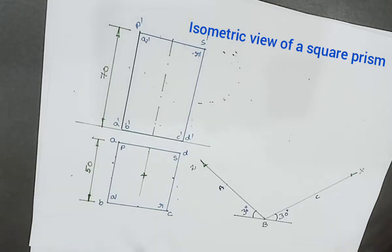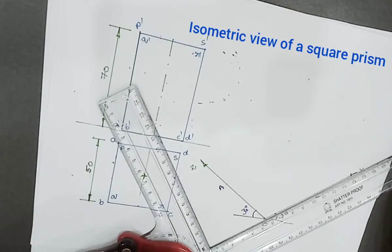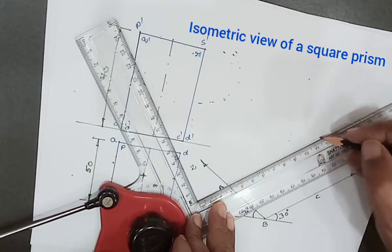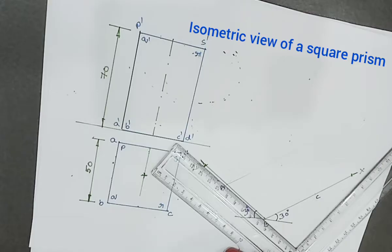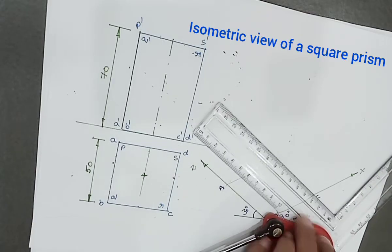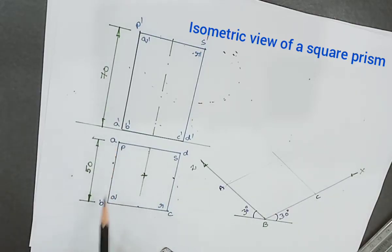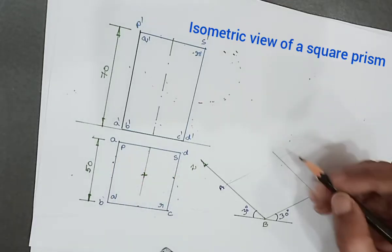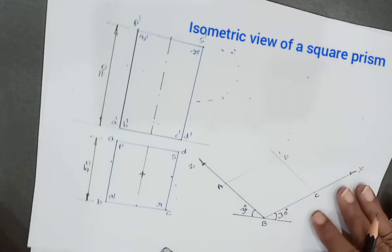After that, parallel to BC passing through A, draw a line. Then parallel to AB through C, draw a line.